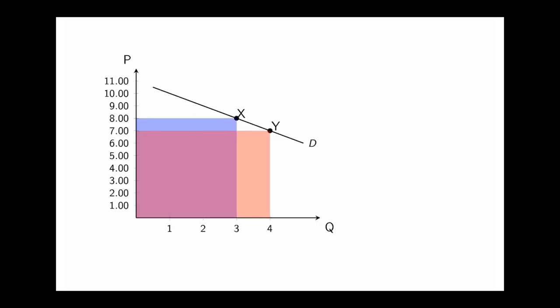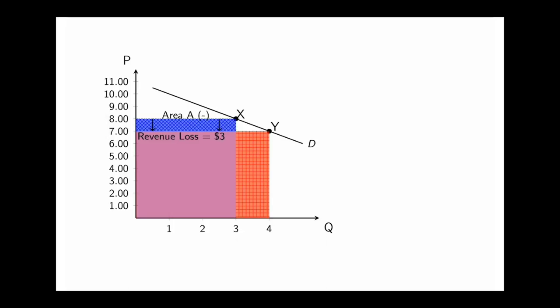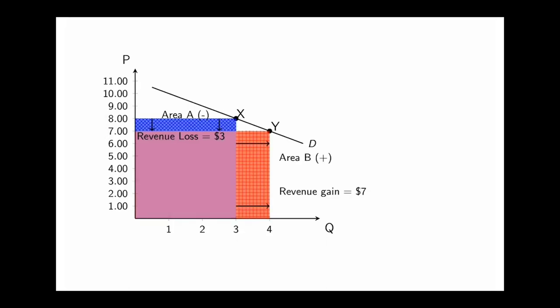Here we have the revenue at point x and point y and they're overlapping each other and we can see what happens when you lower the price you increase the quantity. When you lower the price those first three customers who were paying eight they get to pay a dollar less so you're going to lose three dollars in revenue. But then you sell an extra unit for seven dollars and that more than offsets your revenue loss so your total revenue increases.